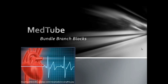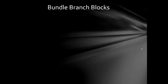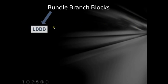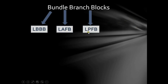So Bundle Branch Blocks could be divided into four main categories. The first is Left Bundle Branch Blocks, the second is Left Anterior Fascicular Blocks, the third is Left Posterior Fascicular Blocks, and the fourth is Right Bundle Branch Blocks. Or you could have a combination of those.